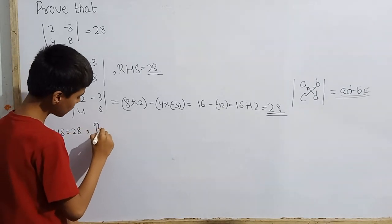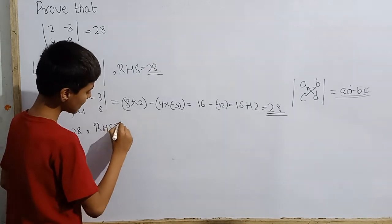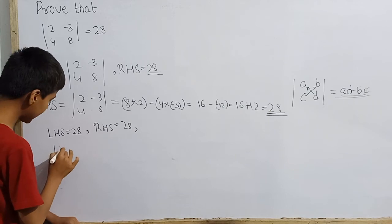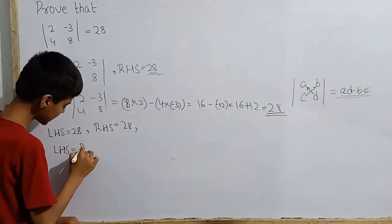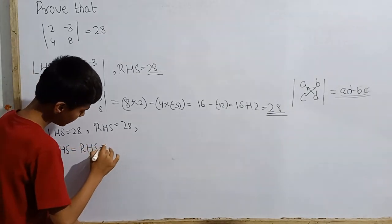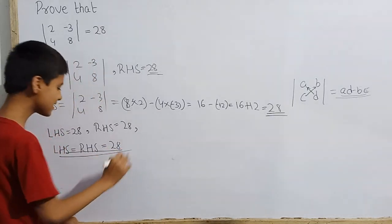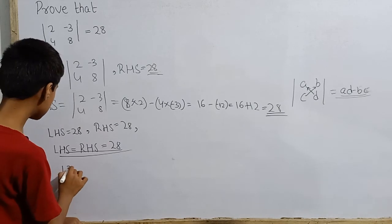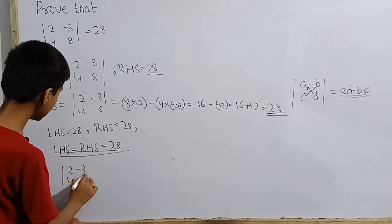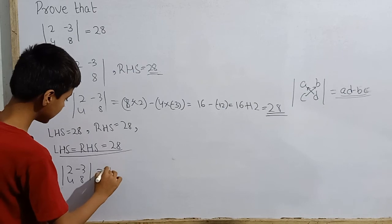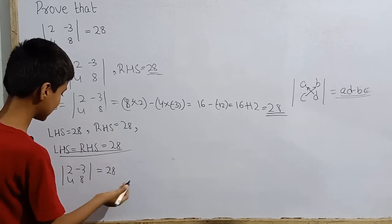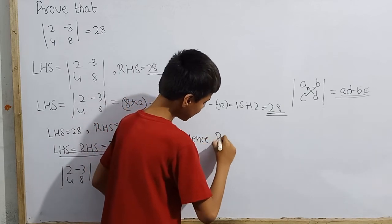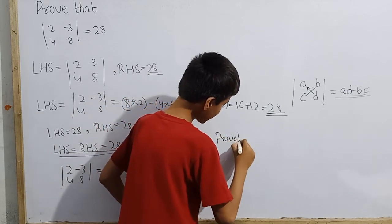While RHS is also 28. Wow, this is amazing! LHS and RHS are equal here. LHS equals RHS which equals 28. This is reality - this determinant 2, minus 3, 4, and 8 is really equal to 28. And hence it is proved.